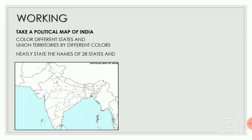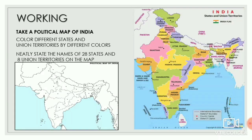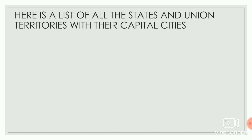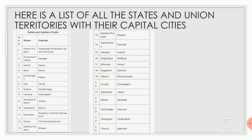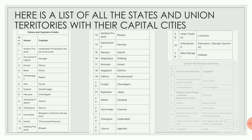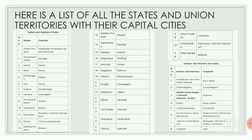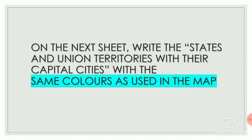Then neatly state the names of 28 states and 8 Union territories on the map of India. You can take help from the map shown on the screen. Also, here is the updated list of all the states and Union territories with their capital cities — this is the latest list as per the year 2020 records.